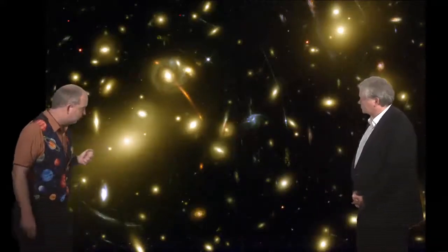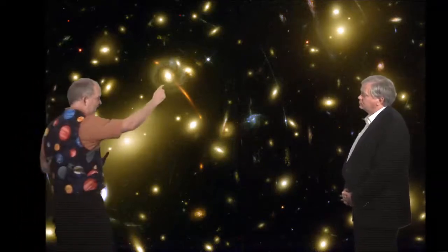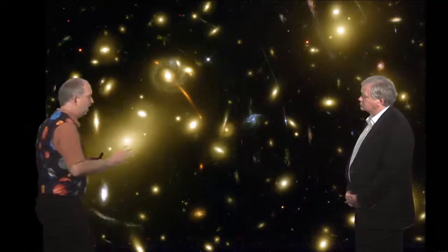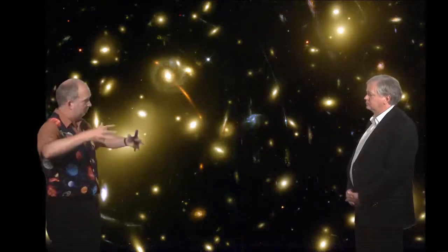This is something we've talked about earlier in the course. The idea is that, in this case, we've got a cluster of galaxies and its gravity is actually bending the light of background galaxies, so you see these arc-shaped patterns. Those are galaxies far behind the cluster whose light is being distorted and bent.